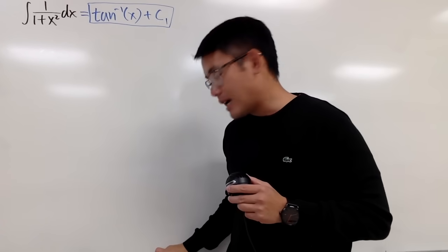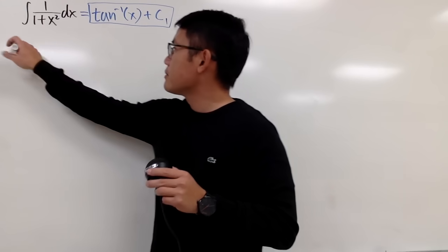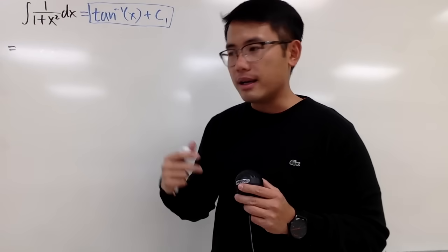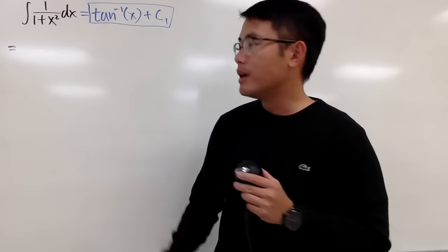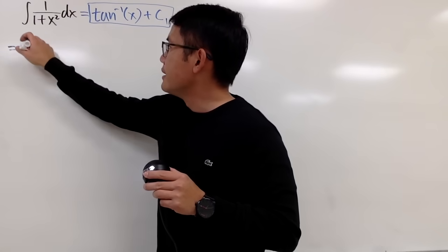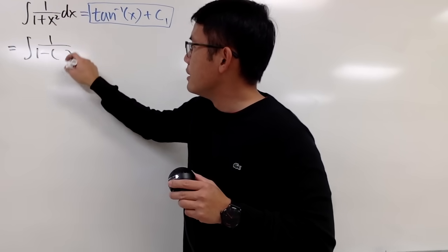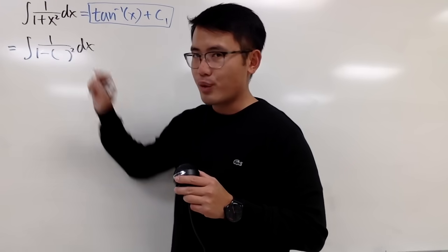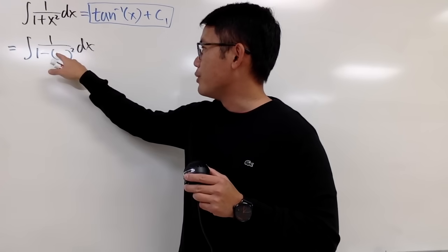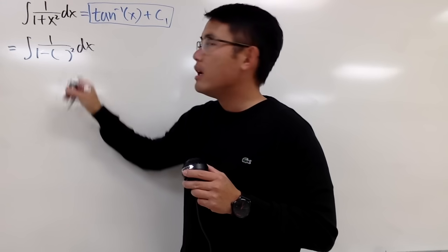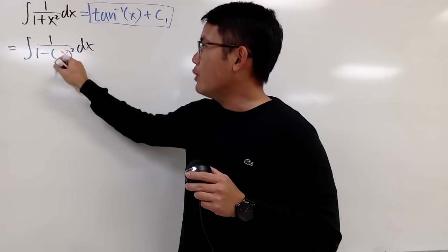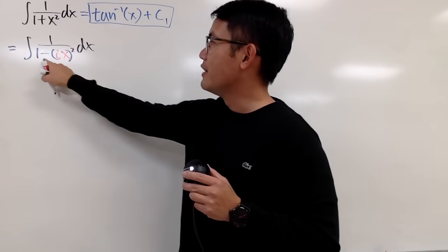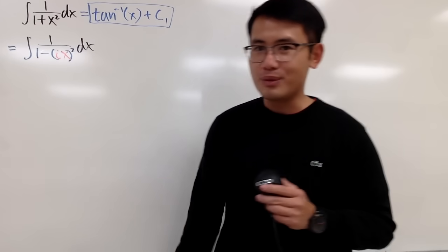And now let's see how can we talk about the complex situation. We cannot factor 1 plus x squared as the product of two linear factors in the real world. But if you look at this right here as the integral of 1 over 1 minus something squared dx, then we can factor difference of two squares.